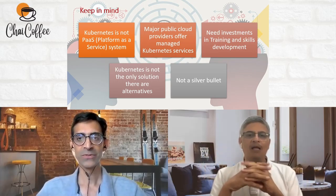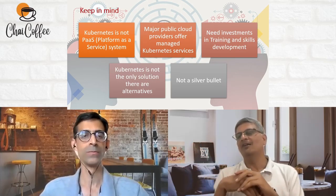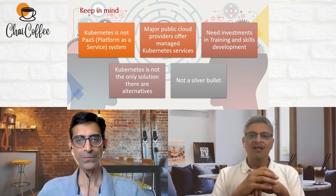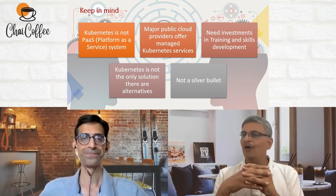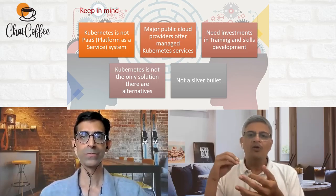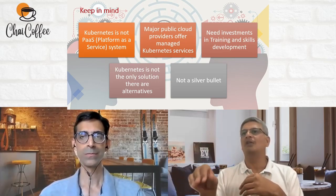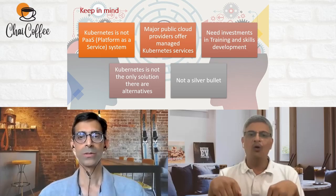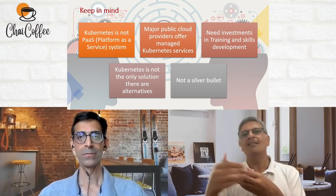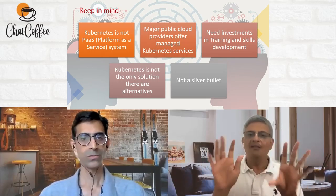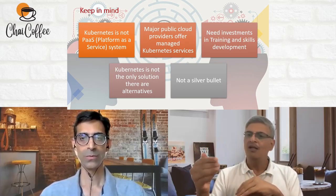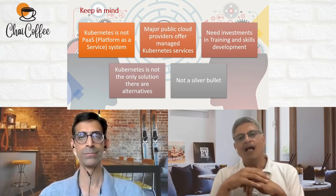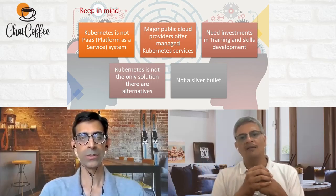One misconception is that people assume Kubernetes is like Platform as a Service — that it takes care of everything including hardware. It's not. Kubernetes sits on top of hardware that is already provisioned, whether bare metal servers or a cloud provider like AWS or Azure. It works only at the container level; below that you need your own platform. You need your own servers or hosting on AWS, Azure, and so on.